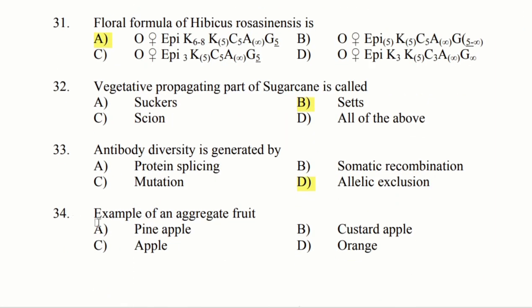Next question: Example of an aggregate fruit. Option A: pineapple. Option B: custard apple. Option C: apple. Option D: orange. The answer is option B, custard apple.